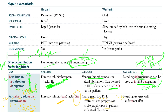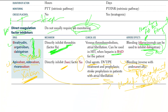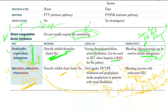The adverse effect is bleeding. You can reverse the Factor Xa inhibitors with Andexanet alfa. Andexanet alfa is a recombinant modified Factor Xa — it is an inactive Factor Xa decoy. These drugs bind to it instead, so they are not causing any bleeding.